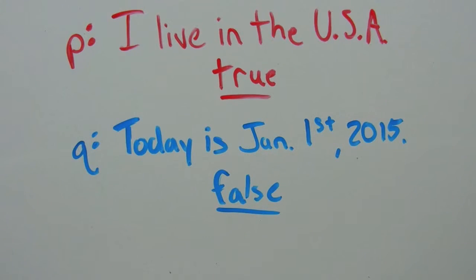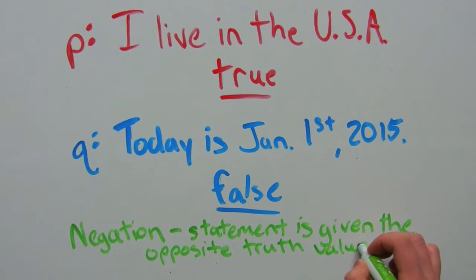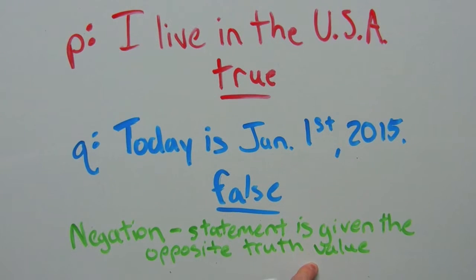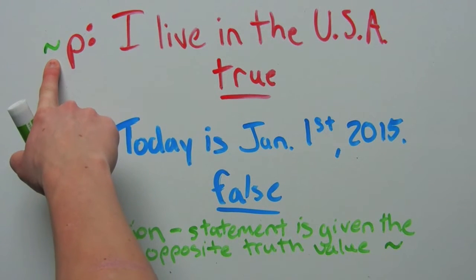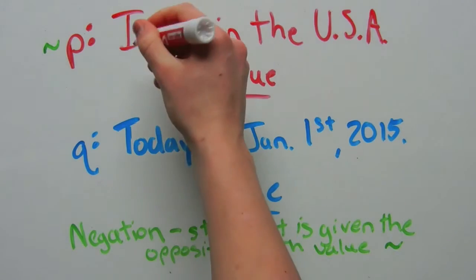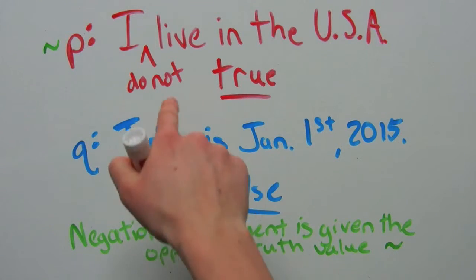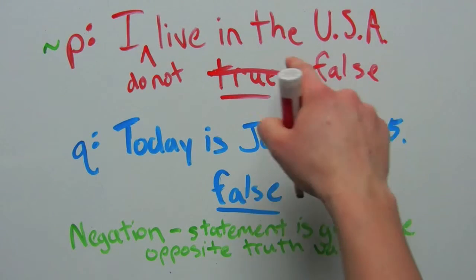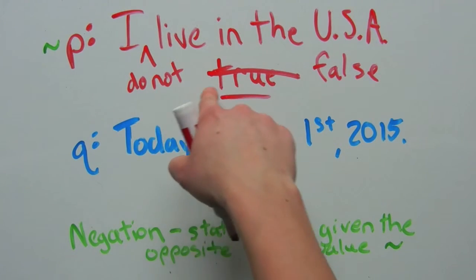Now let's go over what a negation is. A negation is where the statement is given the opposite truth value. The symbol for a negation is this. So if we were to negate P — read as 'not P' — then this will become: 'I do not live in the United States of America.' That statement now becomes false because I do live in the USA. Since we negated it and said that I do not, now that goes from true to false.